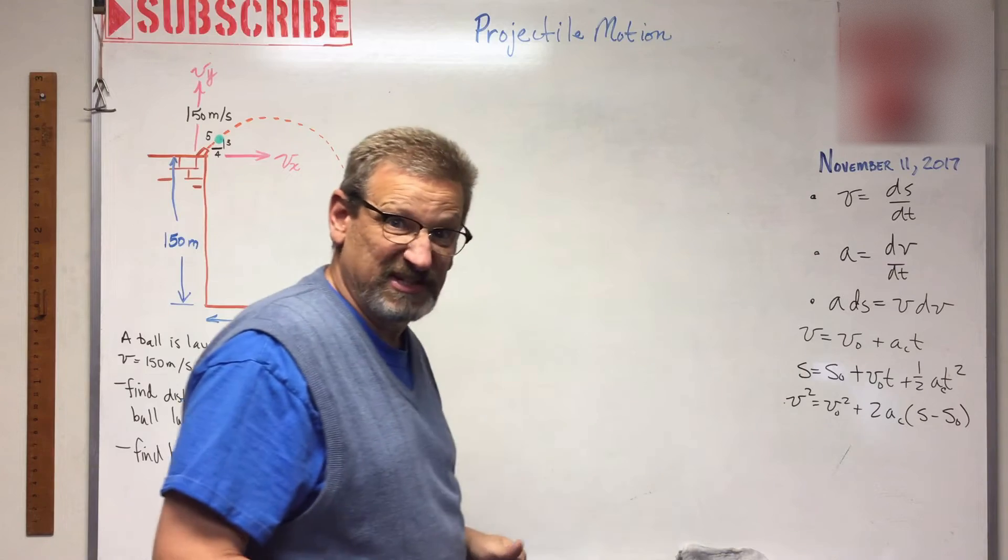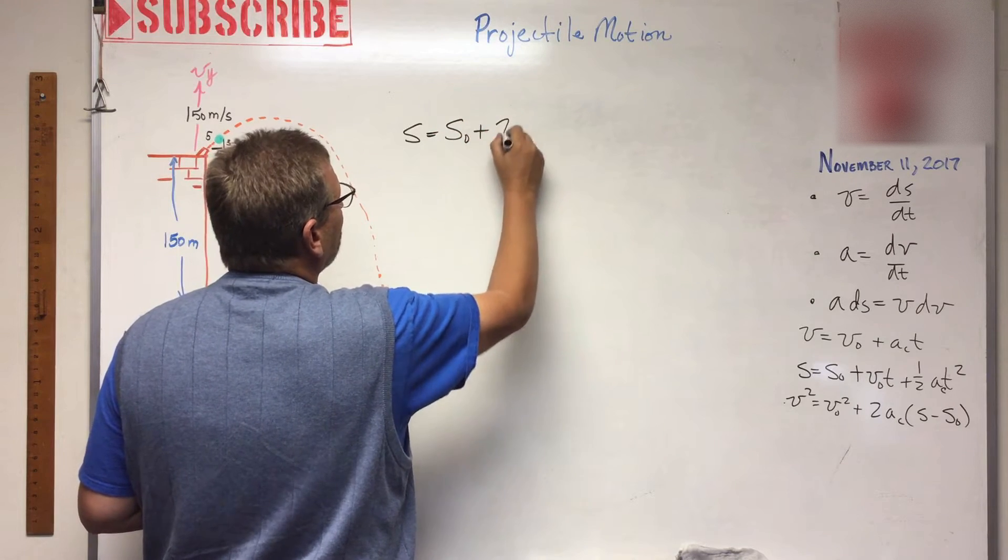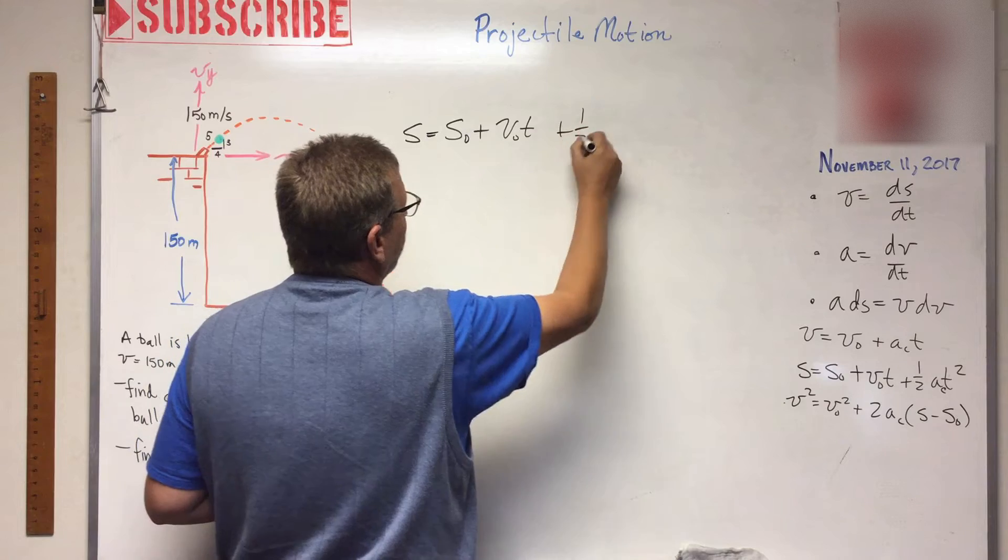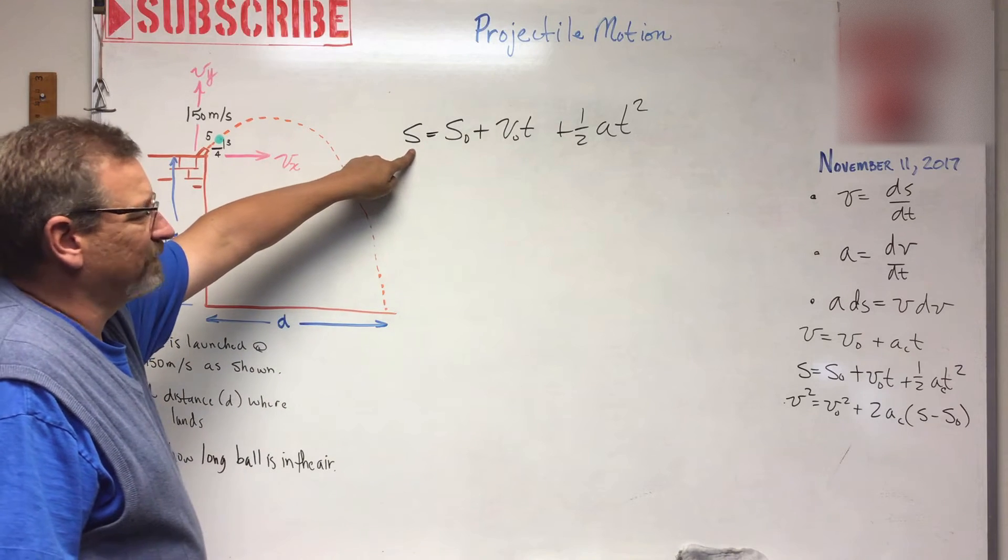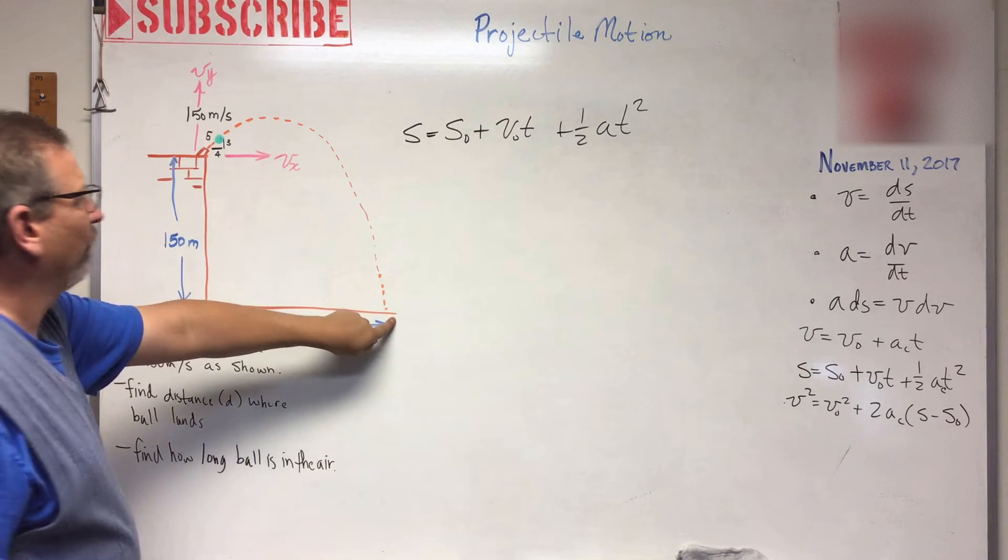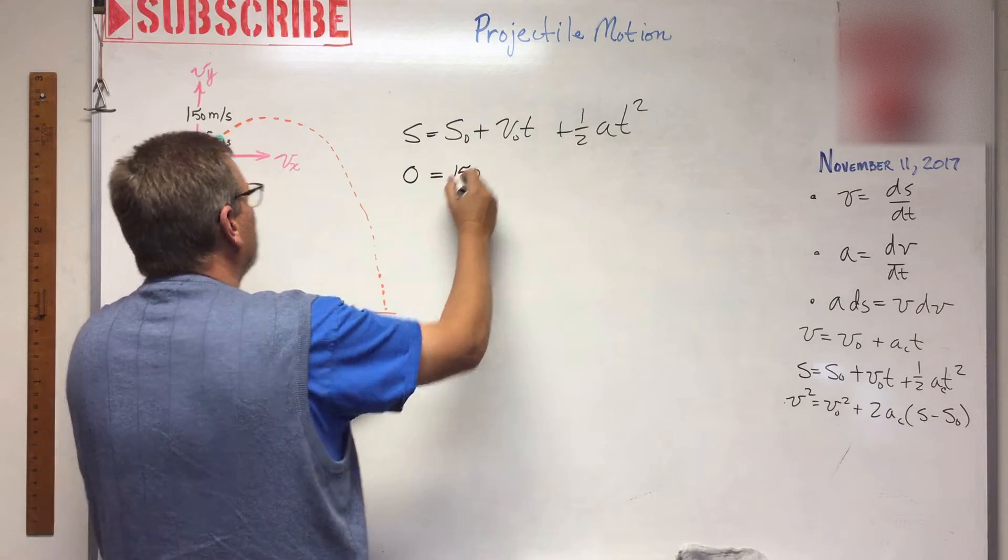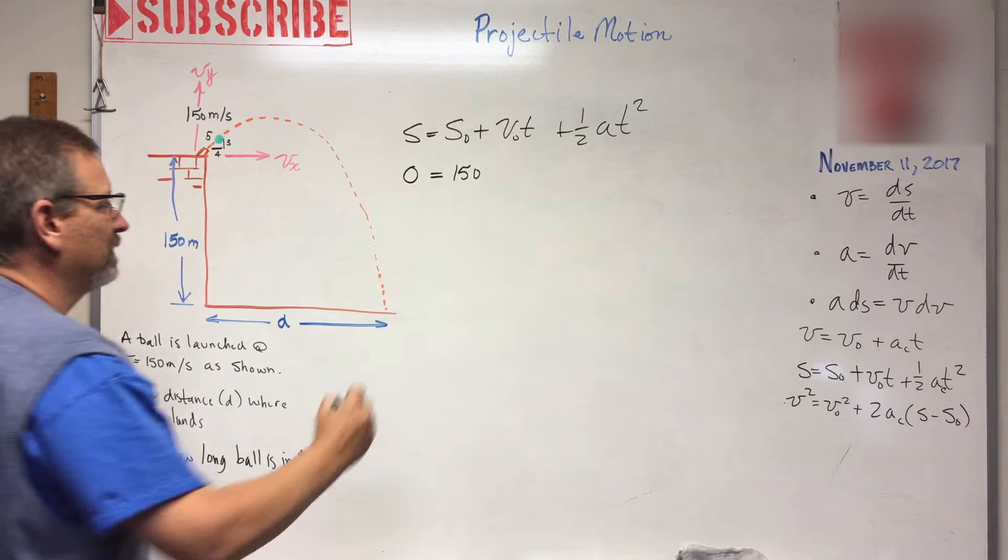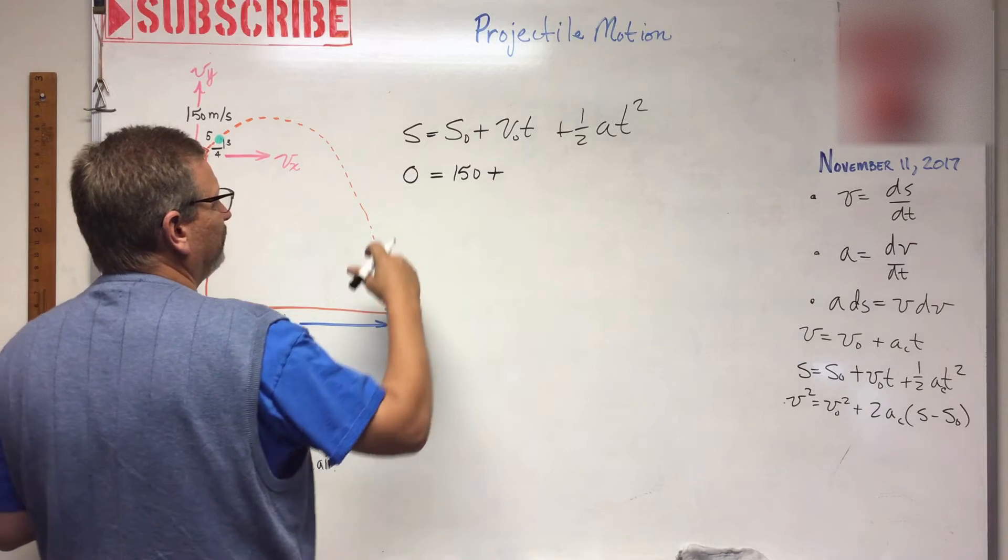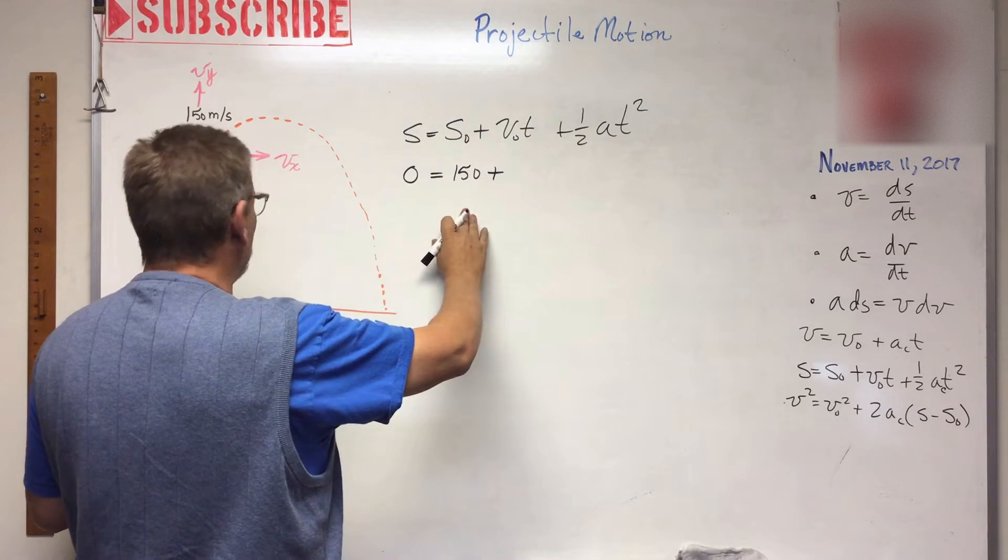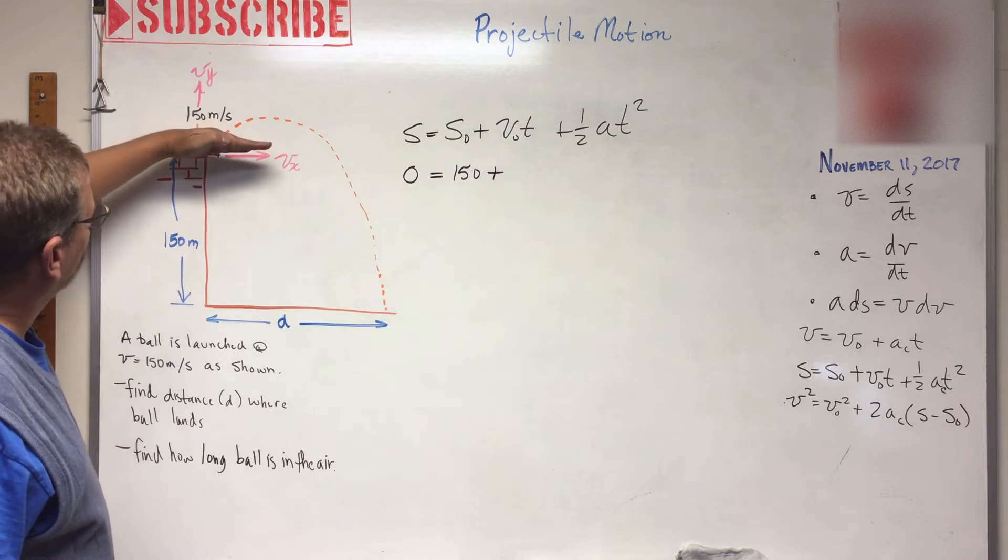So s is equal to s naught plus v naught t plus one half a t squared. Let's just substitute in what we know. So s of course is final position, let's call that zero, right? He's going to wind up at zero. Where did he start out at? He started out at 150 feet off the ground because that's how tall my building is over here. Now what are we doing here? Let's do this in the y direction. This is in the y direction. Our final position is at zero, our initial position was at 150. That's the y.